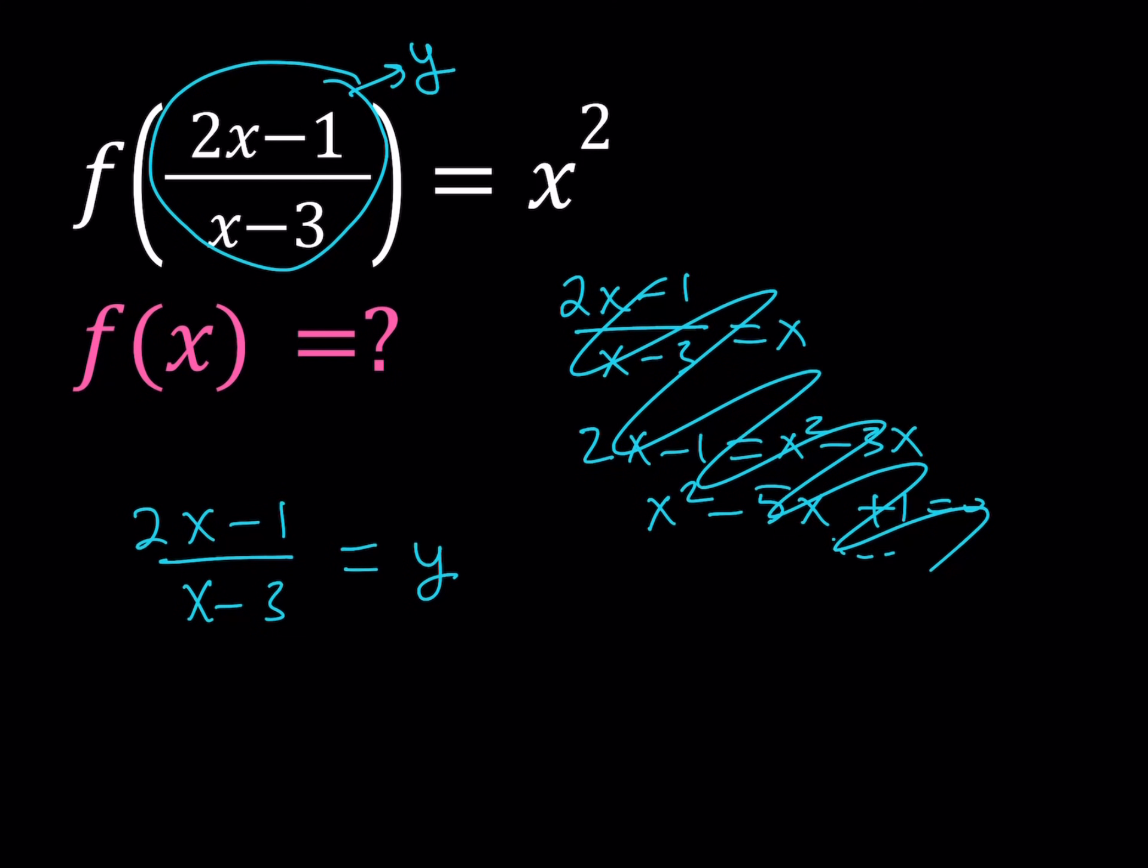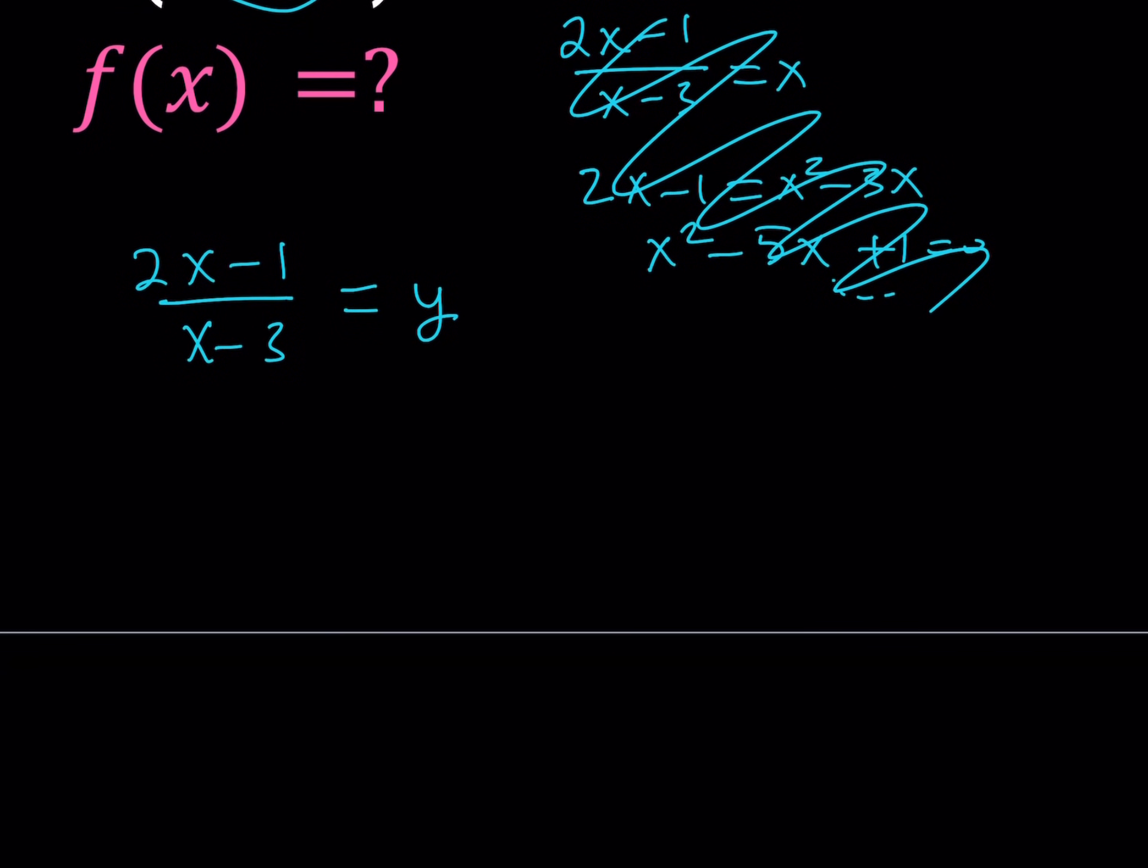So now, what happens on the right-hand side? Since I have x squared, I have to be able to replace x with something. So let's go ahead and solve this in terms of x. Cross multiply.